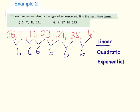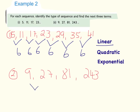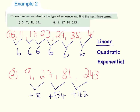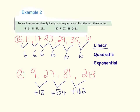For the second sequence: 9, 27, 81, 243. The first differences are: 27 minus 9 is 18, 81 minus 27 is 54, and 243 minus 81 is 162.